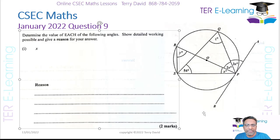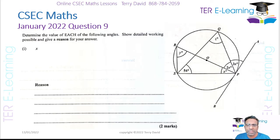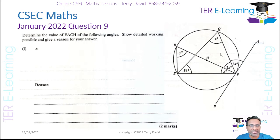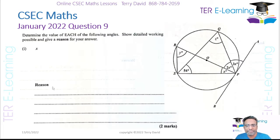They want us to determine the value of each of the following angles and give a reason for our answer. So first, what is the value of angle X? Now, what we do know is that RP is a diameter and there is a tangent.